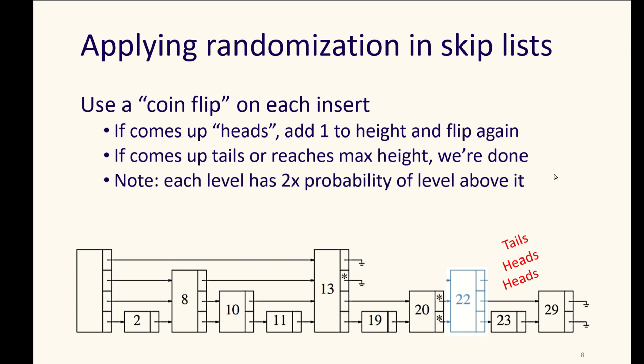So each level then has a 2 times probability of the level above it, or each level has half of the probability of the level below it. We just need to re-hook these potentially log n pointers from those different levels that we're connecting to there.